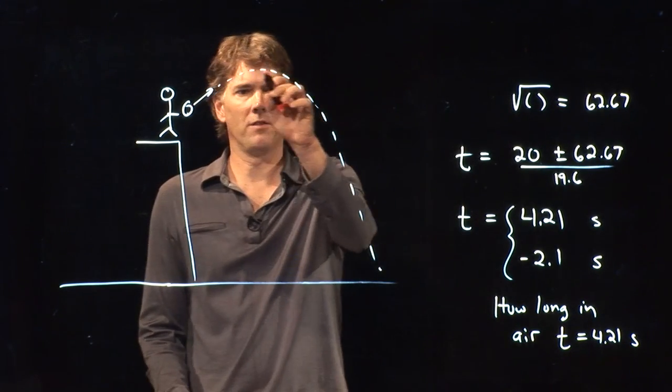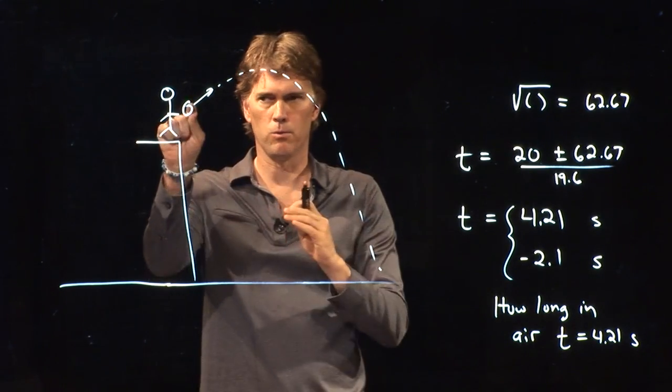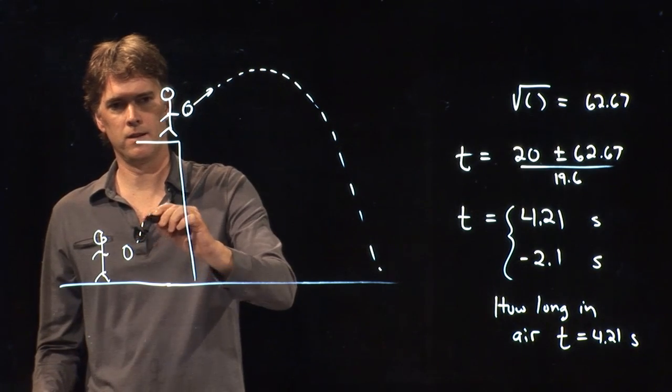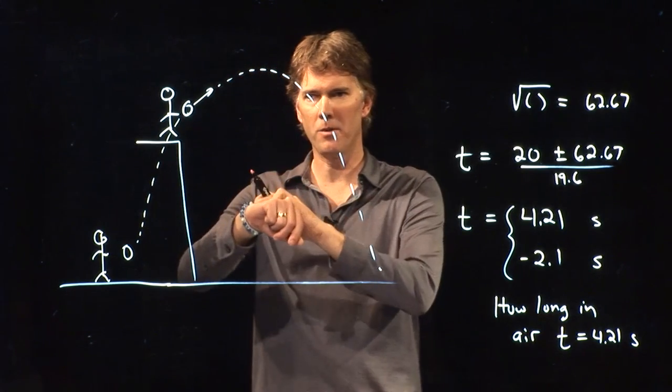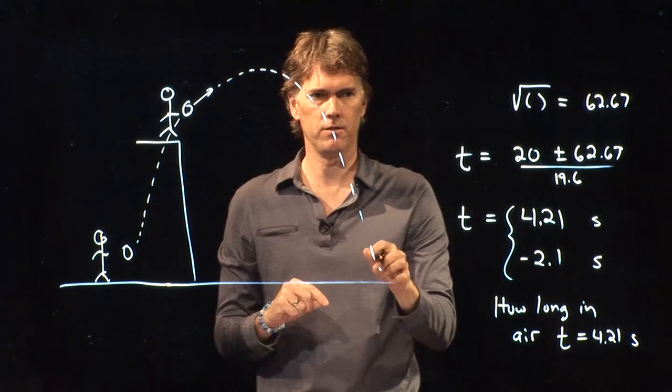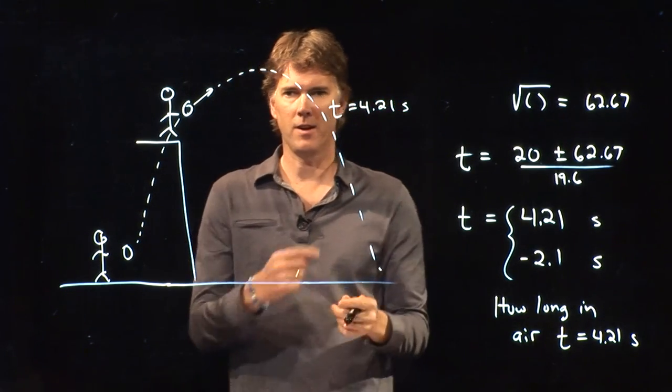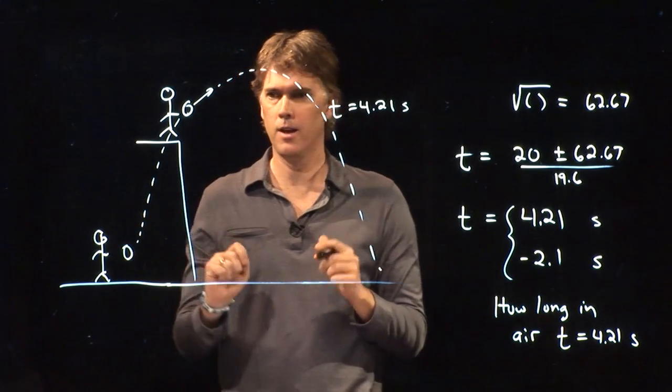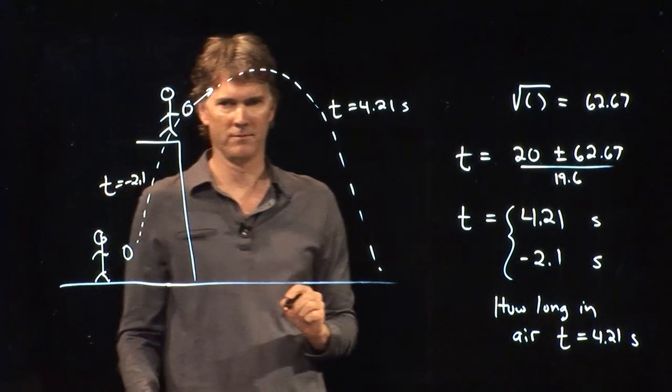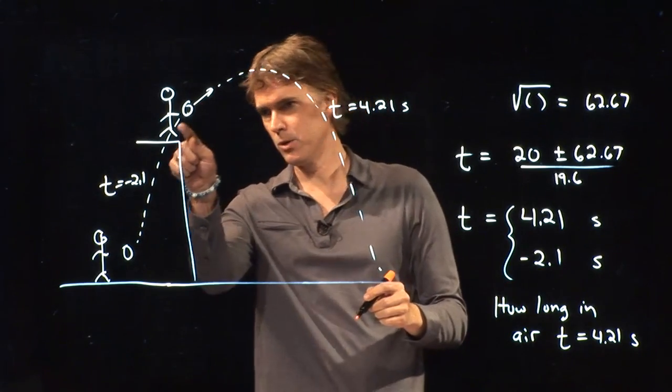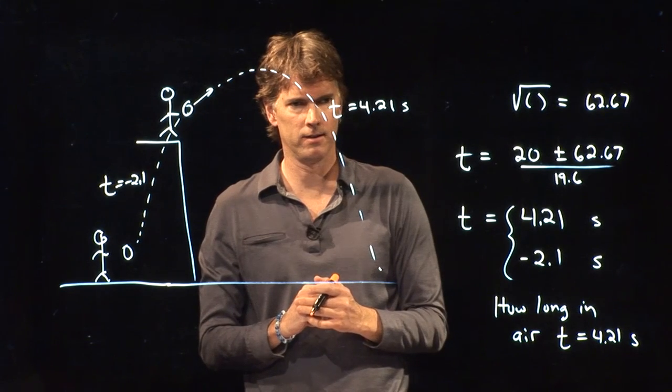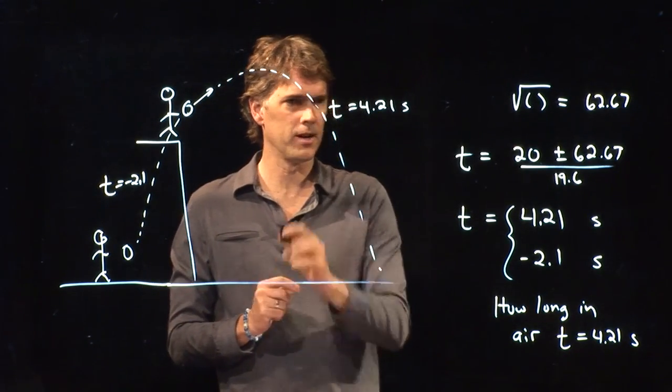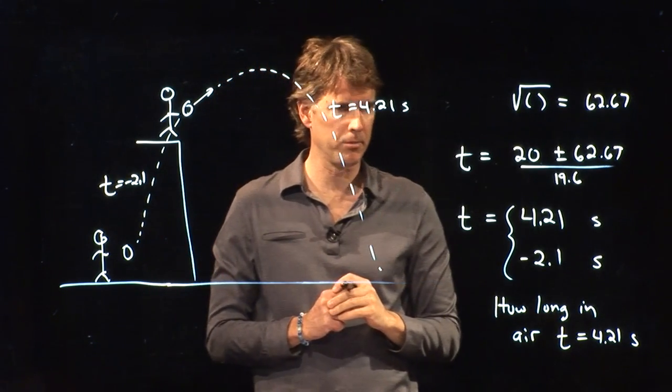When we said it's 4.21 seconds from there to there, we said, let's start our clock right when it's at my hand. But let's say our buddy was standing down here, and they tossed this object from there, and it flew past me. And when I started my clock, when it flew past me, it took 4.21 seconds to hit the ground. If I went back in time and said, how much earlier did my friend toss the ball from here? It would be negative 2.1 seconds. That's what that means. If I reverse the motion, it would take 2.1 seconds going the other way to get back down to the ground. Kind of cool, right? When it came back down to me at that point, then it would be 2.1 seconds from there on. Very good.